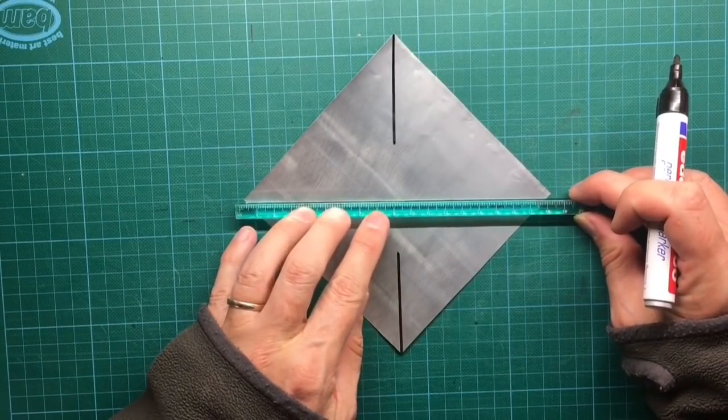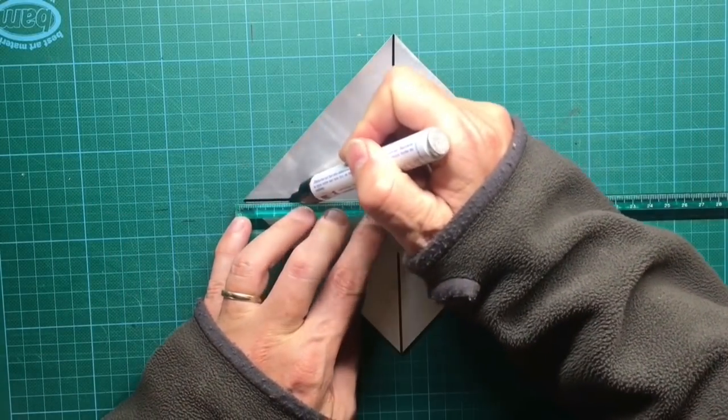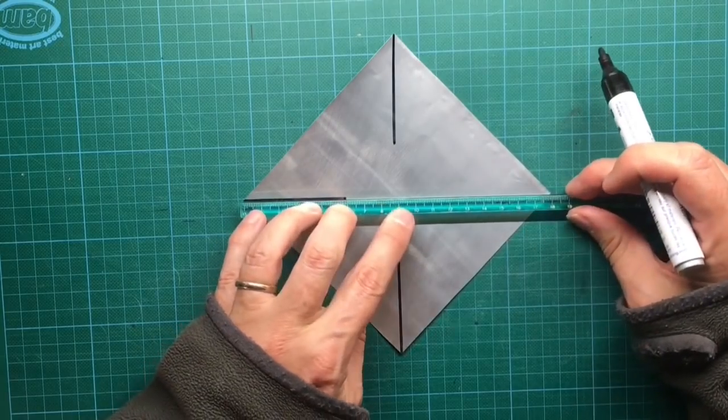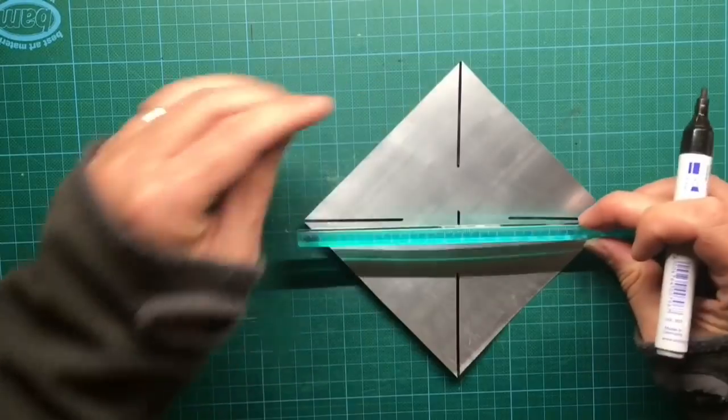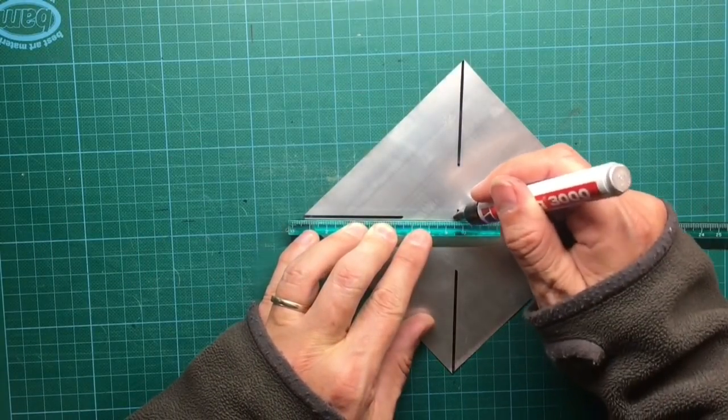The pinwheel is also made from flattened aluminum sheet. Here we have a square of 13 cm. Use the ruler to indicate the diagonal lines and the center.